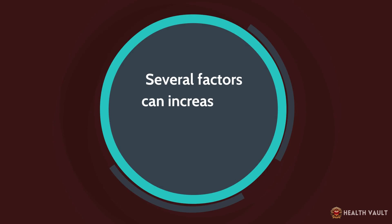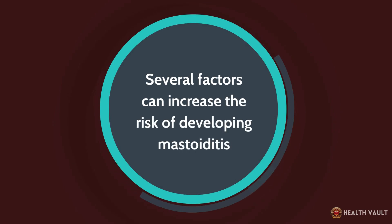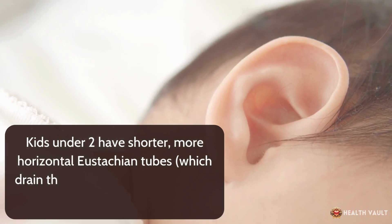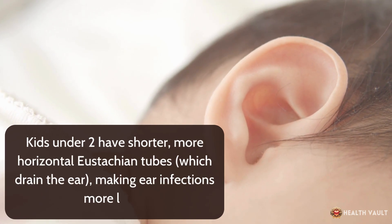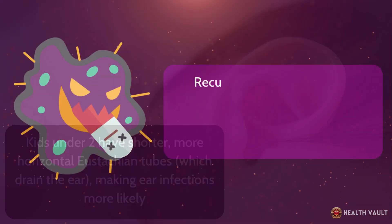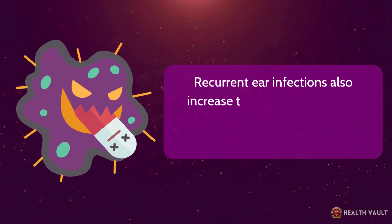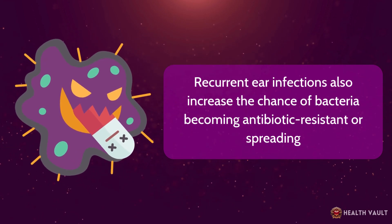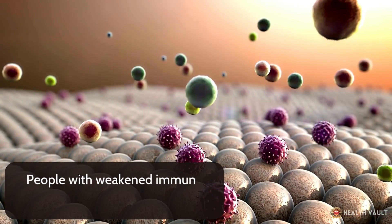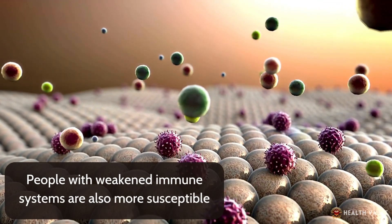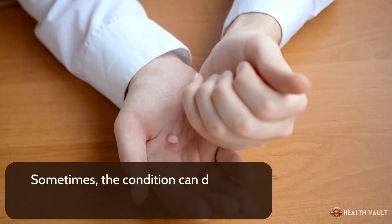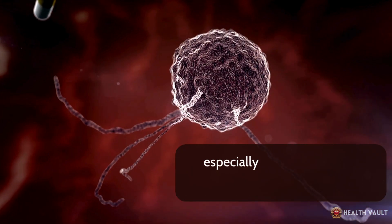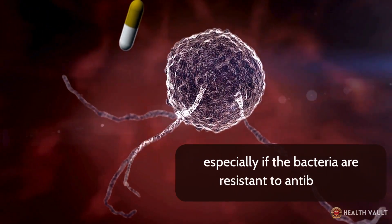Several factors can increase the risk of developing mastoiditis. Kids under two have shorter, more horizontal eustachian tubes, which drain the ear, making ear infections more likely. Recurrent ear infections also increase the chance of bacteria becoming antibiotic-resistant or spreading. People with weakened immune systems are also more susceptible. Sometimes the condition can develop despite proper treatment of an ear infection, especially if the bacteria are resistant to antibiotics.